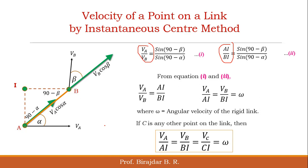So, as stated initially, we know the velocity of point A and its direction, but only the direction of point B. By using this equation — knowing VA, the distance AI, and the distance BI — we can find the unknown magnitude of velocity of point B.